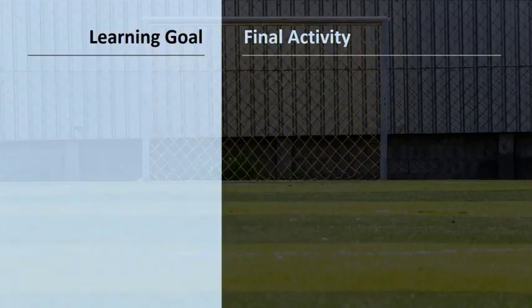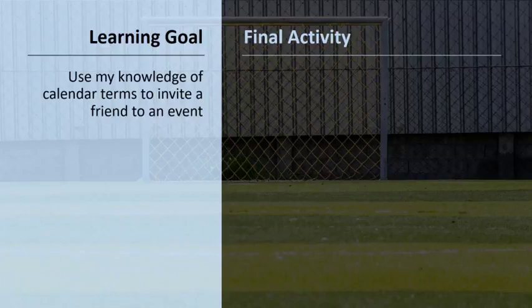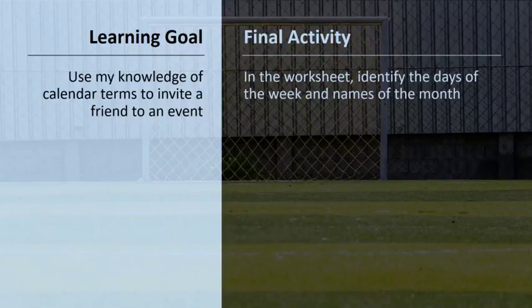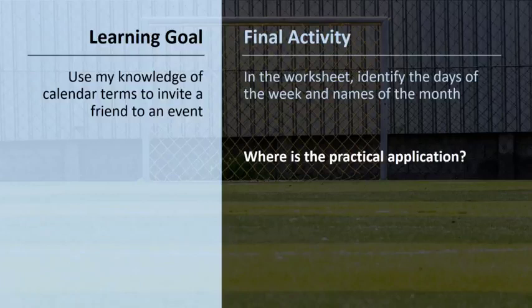In another example, the learning goal involves students being able to use their knowledge of calendar terms to invite a friend to an event. A worksheet asking students to identify the days of the week and the names of the months might be related in content, but unless the instructional activity involves students in actually creating a written invitation or verbally presenting an invitation, it would fall short on performance demand.